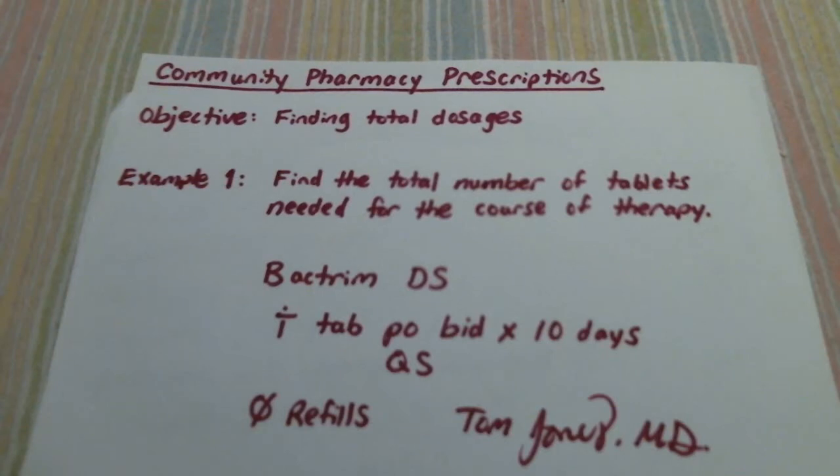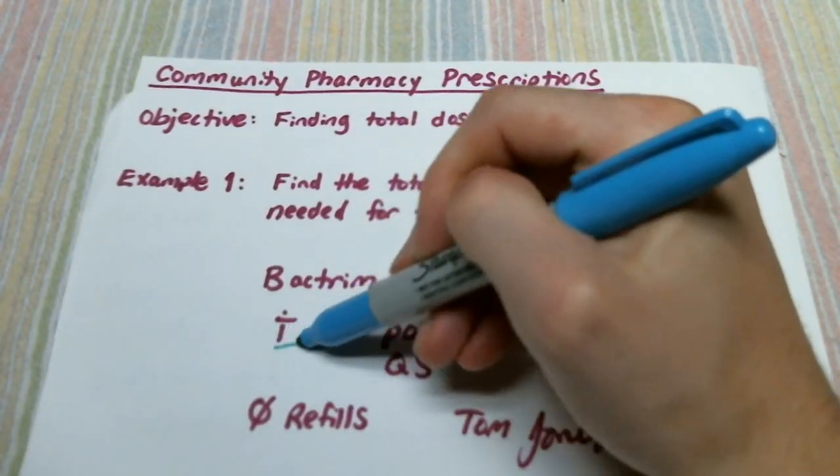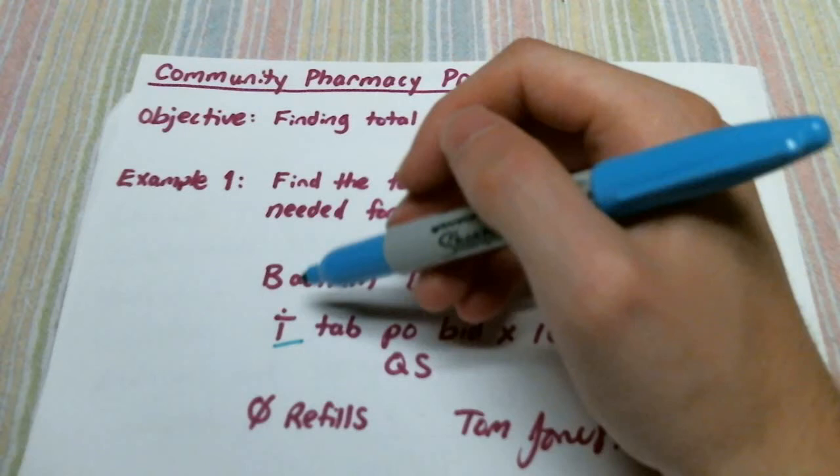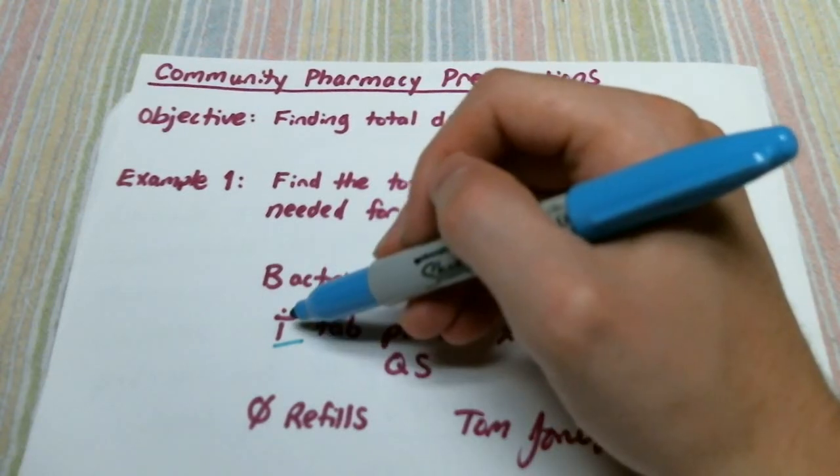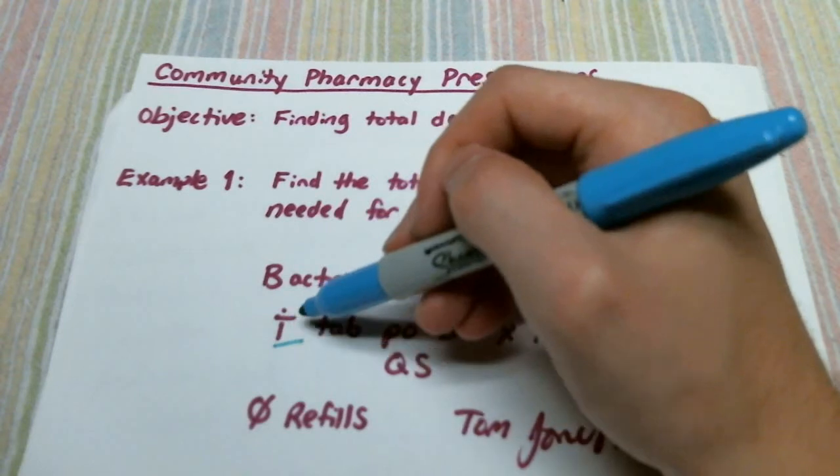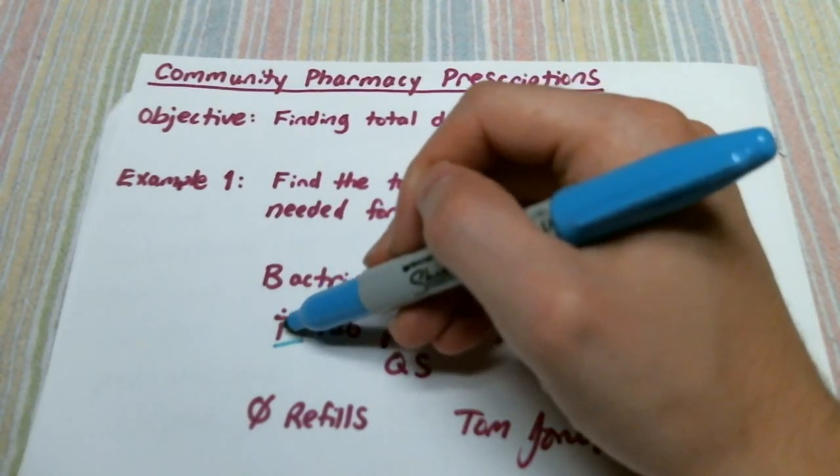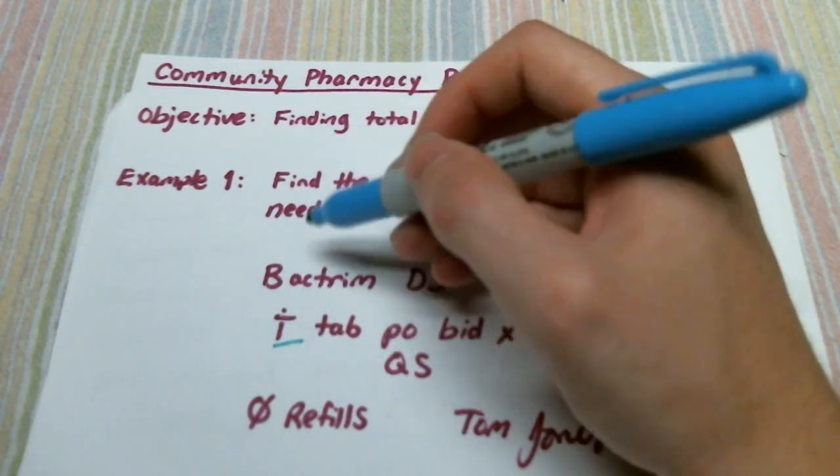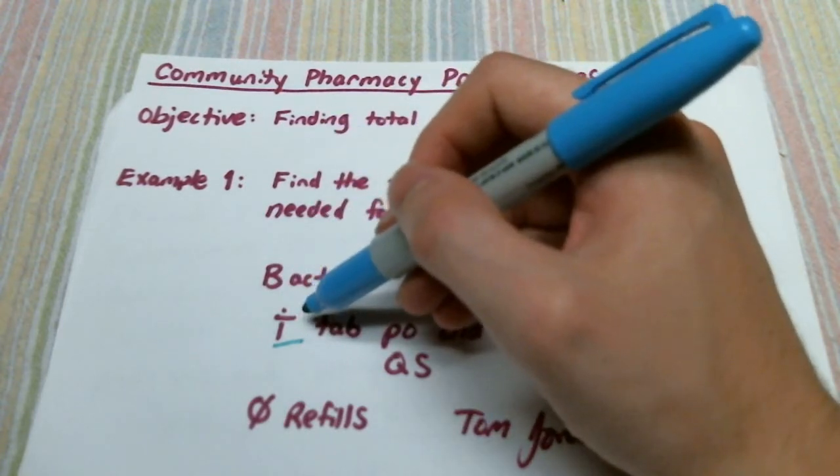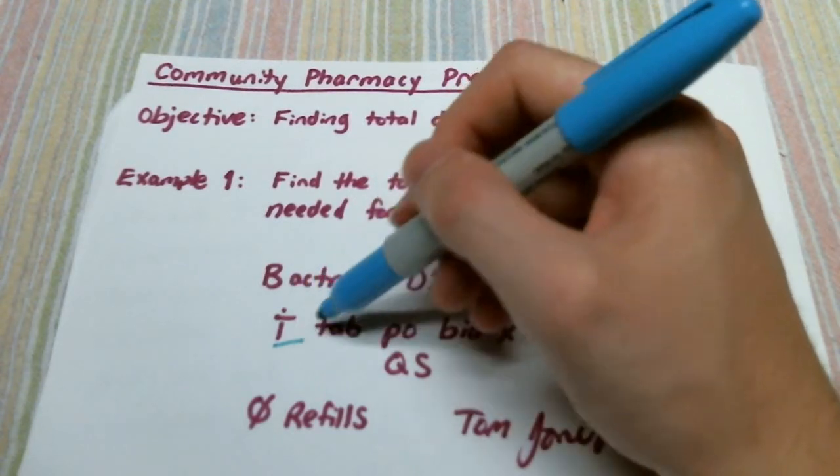Now we have to go through and see what these abbreviations stand for. This symbol here that looks like a lowercase Roman numeral I with a horizontal line separating the main part of the I from the dot, this is a way that prescribers typically write the number one.